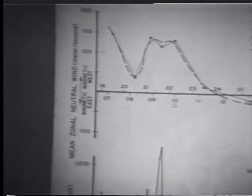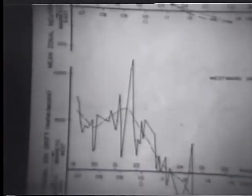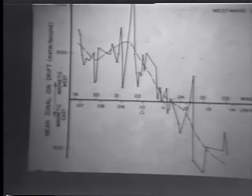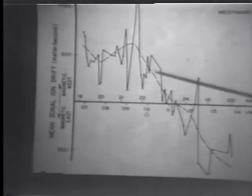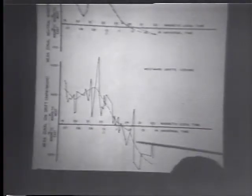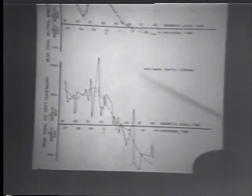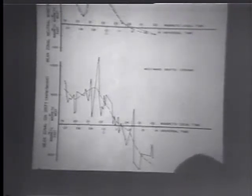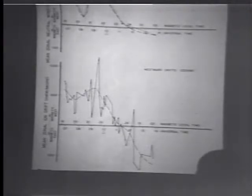Here is the first slide. Down here we see the ion drift as measured during the evening sector; here we have magnetic local time, and the ion drift was to the west, turning around and blowing to the east past midnight. This is for a specific night, February 27, 1973, but it's representative of all the data obtained. The ion drift kind of follows pretty much the convection pattern as predicted.